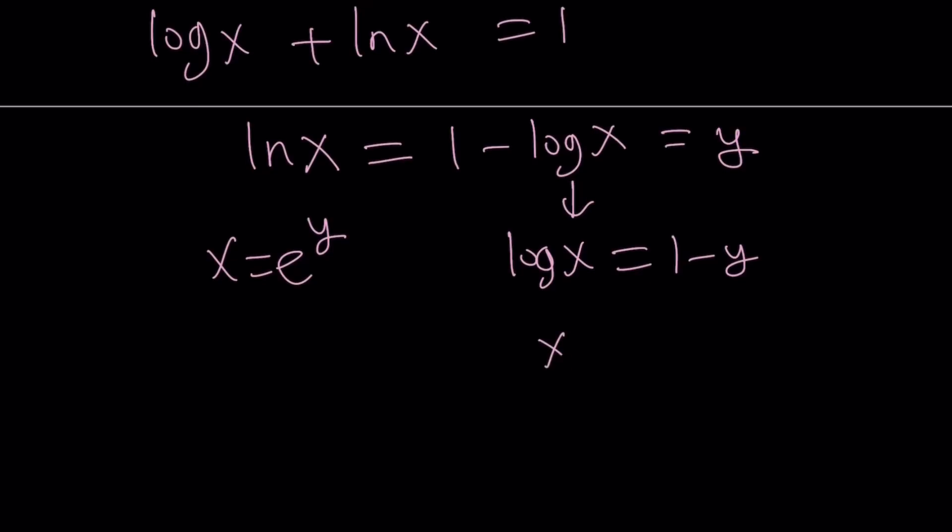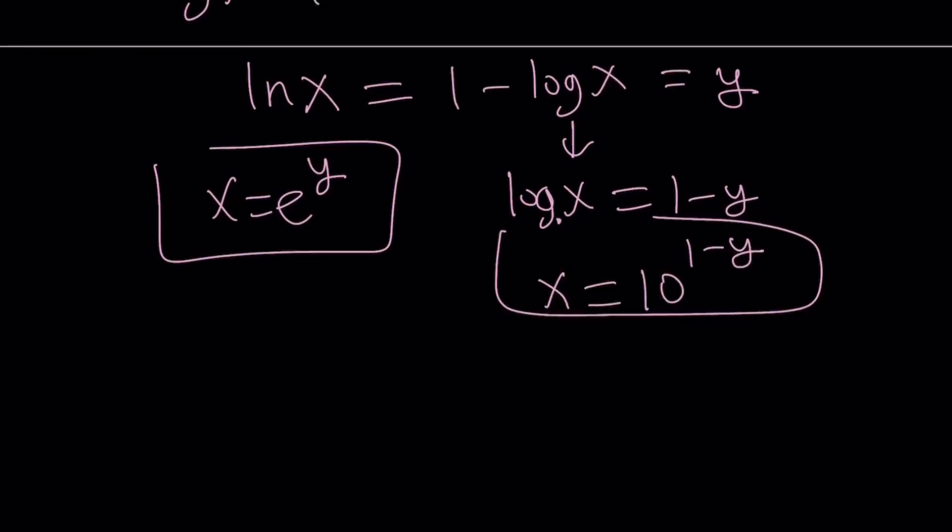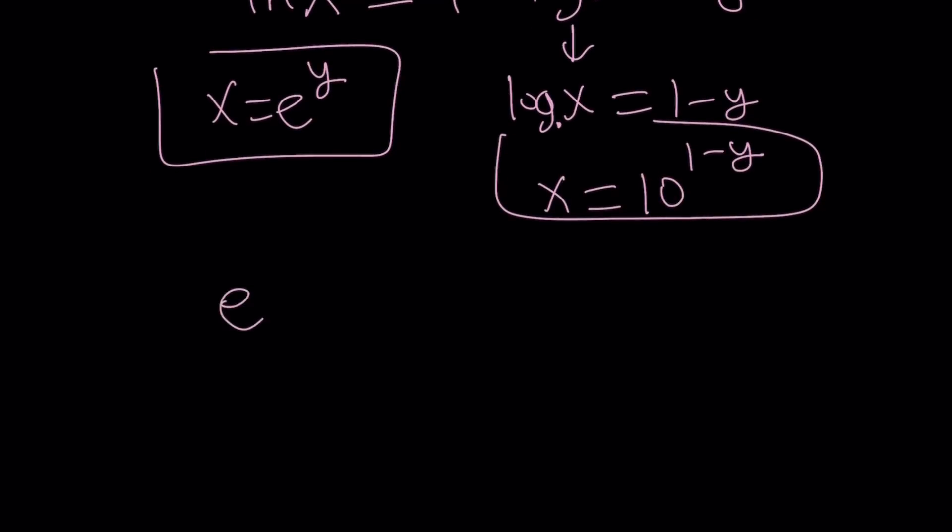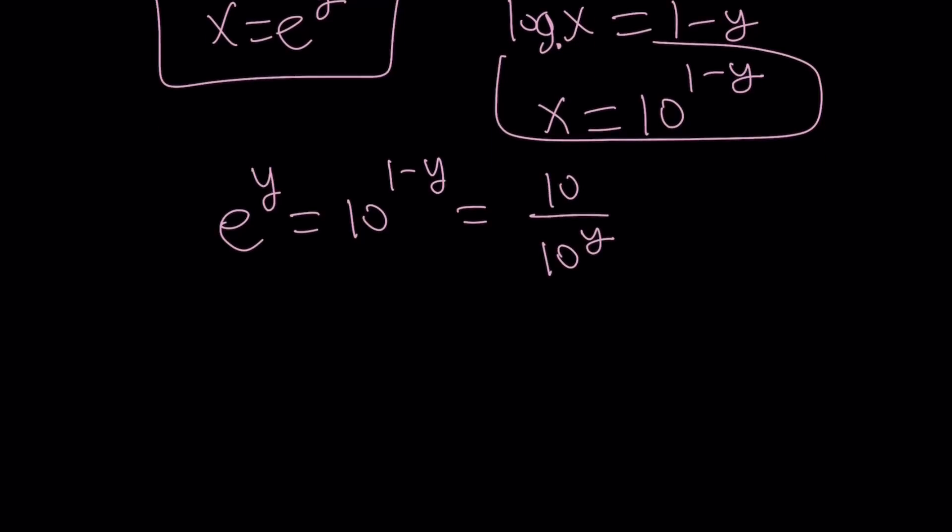And then by replacing, 1 minus log x equals y gives me log x equals 1 minus y. And from here, I get x equals 10 to the power 1 minus y. Because the base is 10 here and the base is e here. So now we've got two different values for x. Let's go ahead and set them equal to each other. So this gives us e to the power y equals 10 to the power 1 minus y.